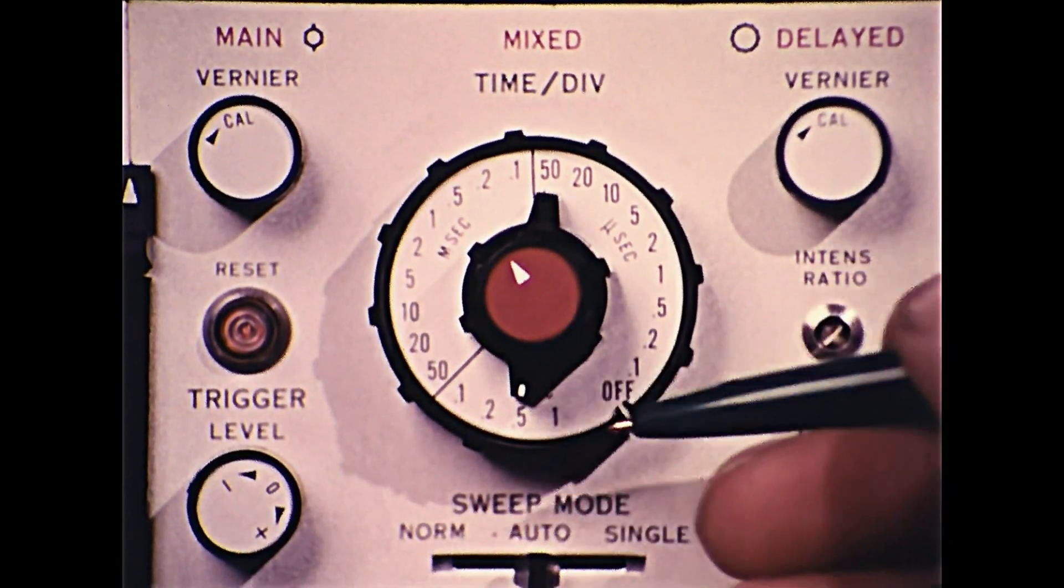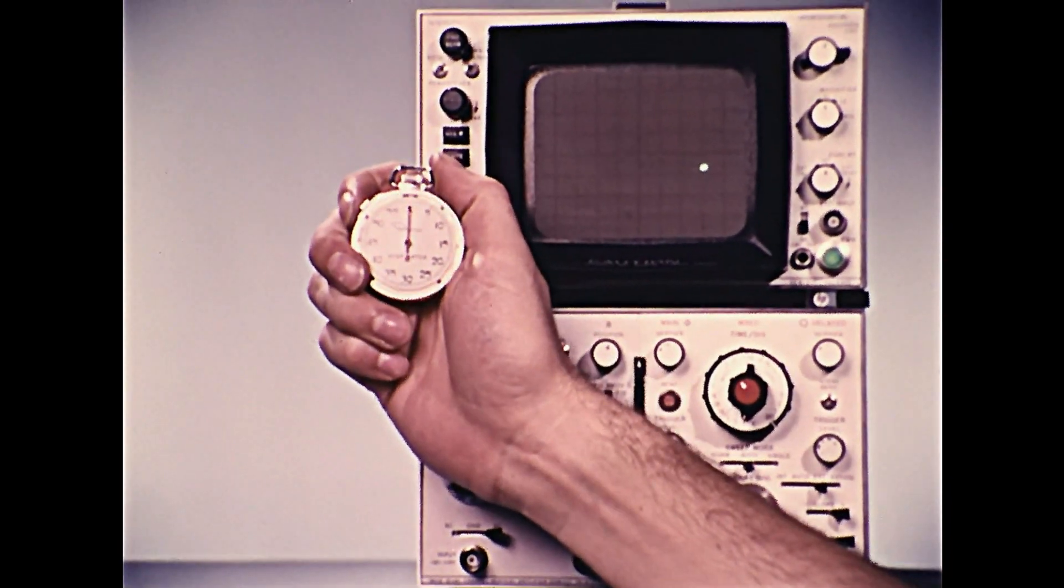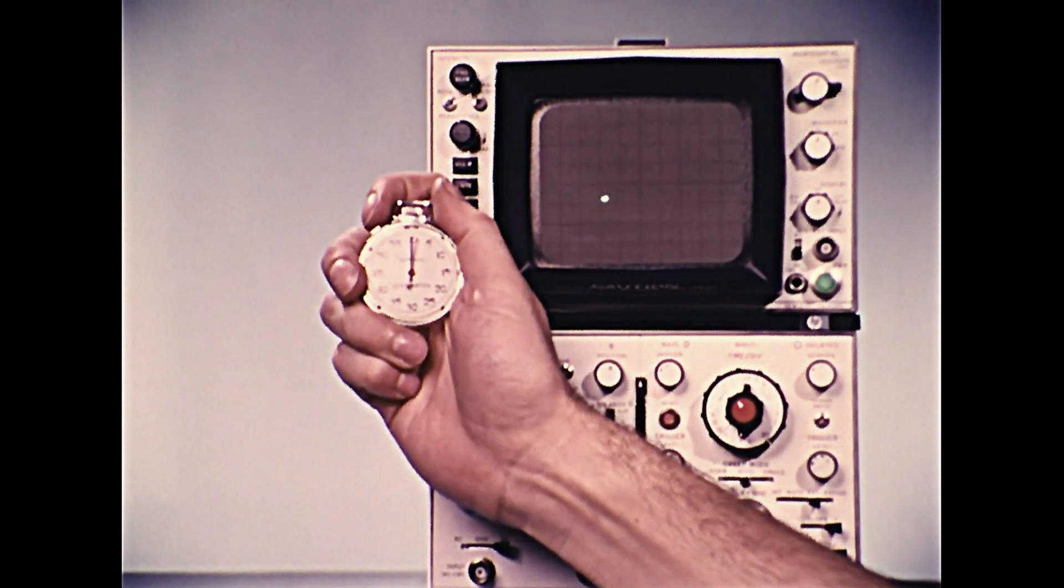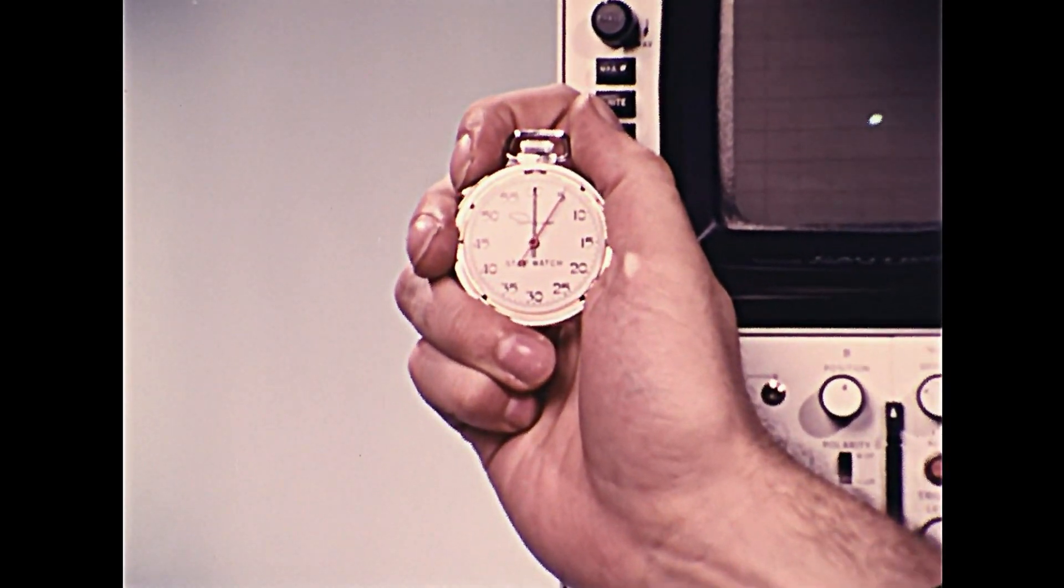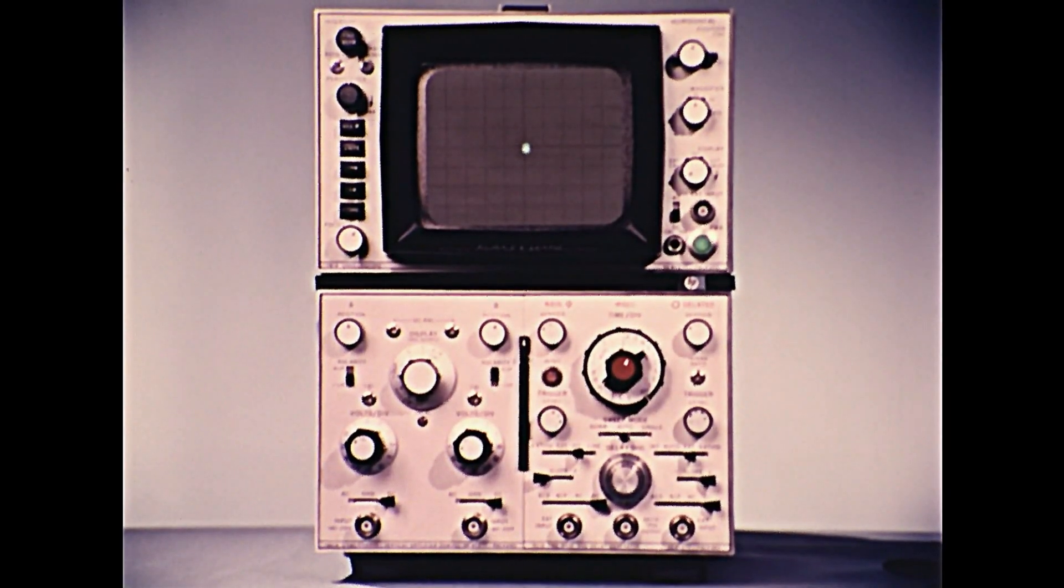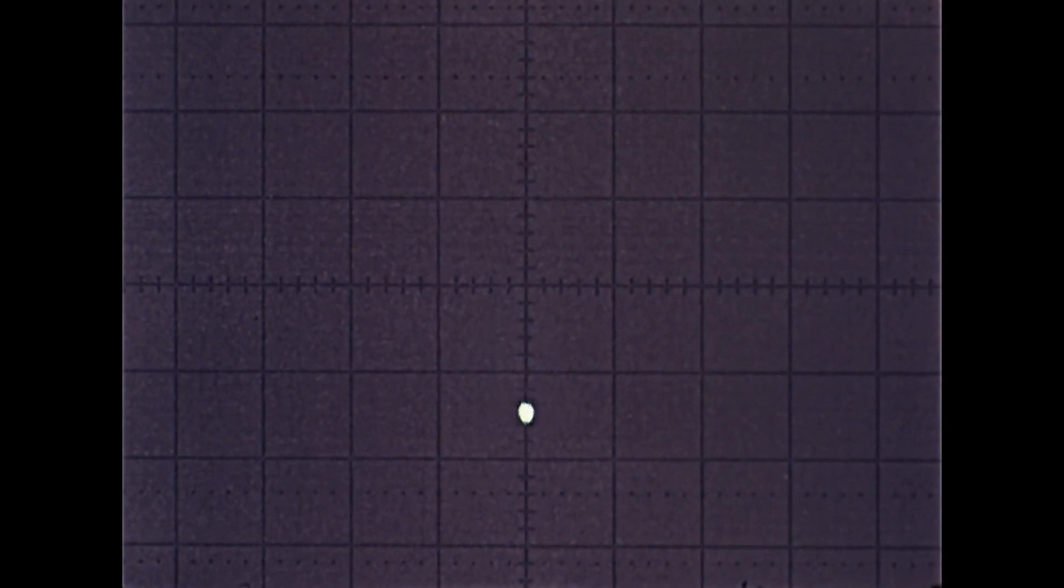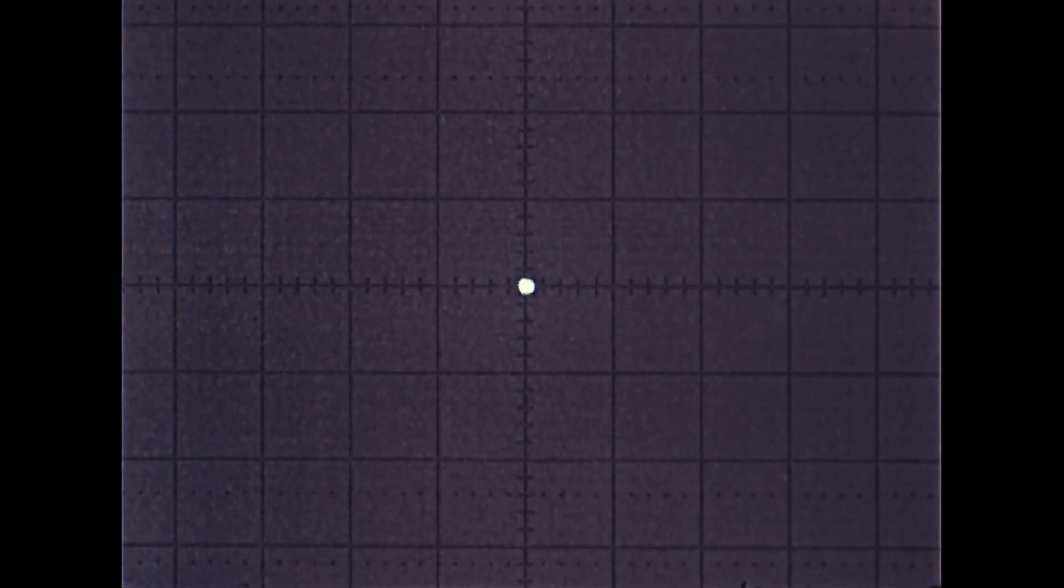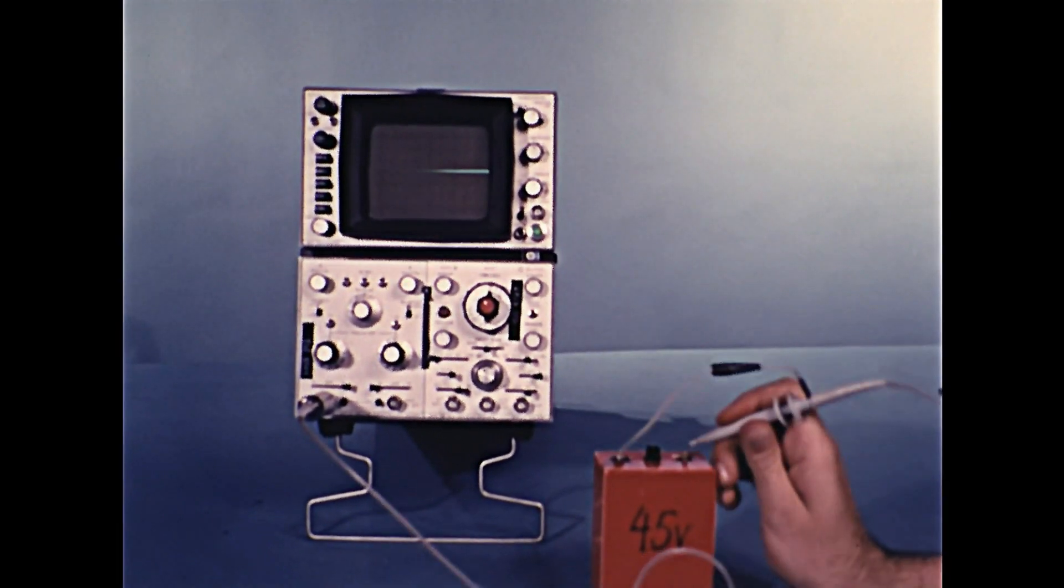A slow sweep rate can be timed by a stopwatch. On the front of the oscilloscope screen is a set of graph lines. The vertical, or y-axis, represents voltage. The horizontal, or x-axis, can represent time. In this demonstration, a battery's voltage is plotted against a slow time base.